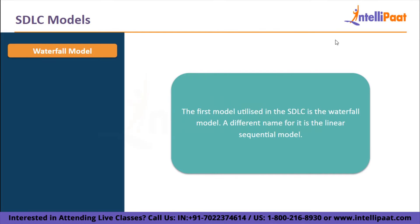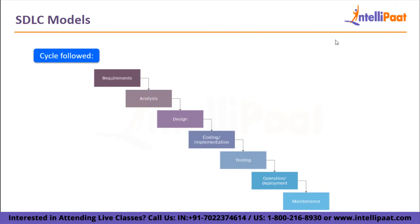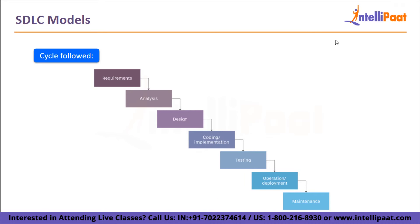The first model utilized in the SDLC is the waterfall model, also known as the linear sequential model. The results of one phase serve as the input for the following phase, and a new phase can only begin after the preceding phase is finished. Requirements are gathered and analyzed first; only once set in stone can system design begin. The SRS document serves as both input and output for the system design phase. Then documents are prepared for implementation and coding throughout the system design and software architecture phases. Coding is completed in the implementation phase, and the software created serves as input for the testing step.